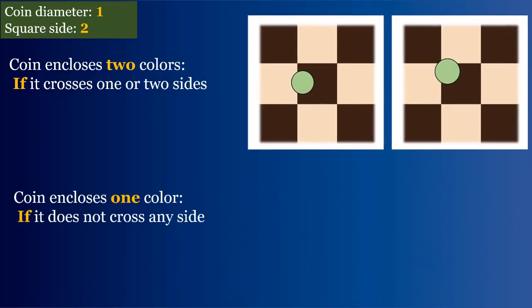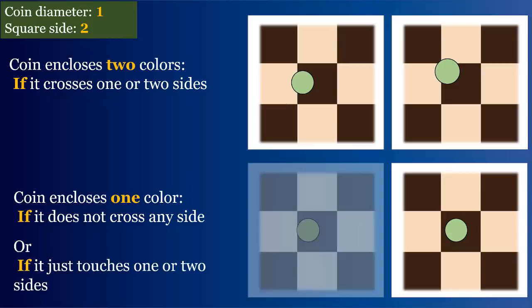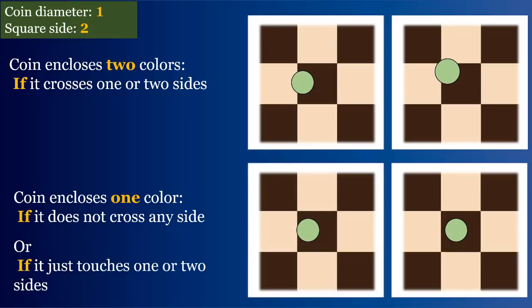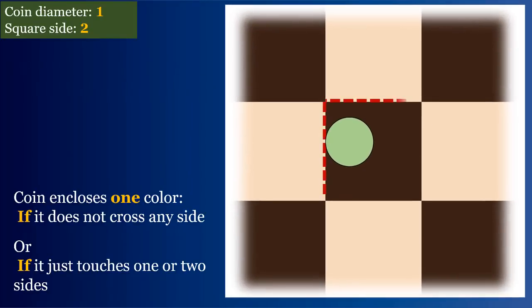And the coin would enclose just one color if it doesn't cross any of the sides as shown below. If the coin touches a side but does not cross it, then also the coin would enclose just one color. So,